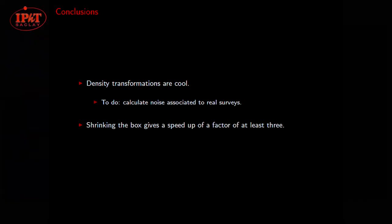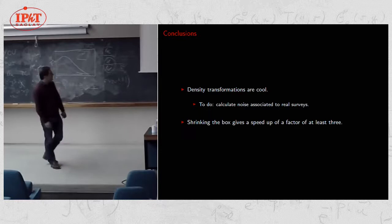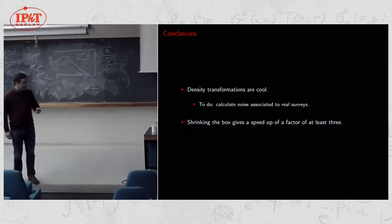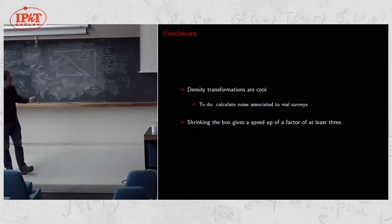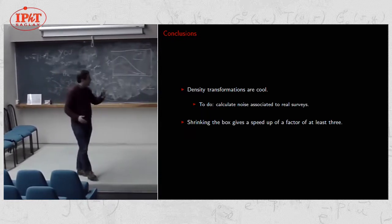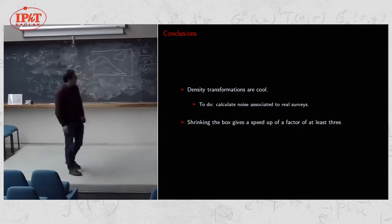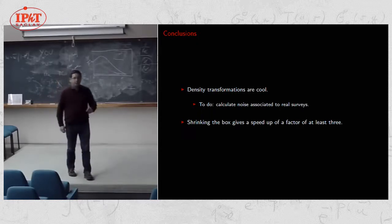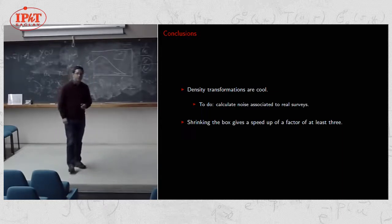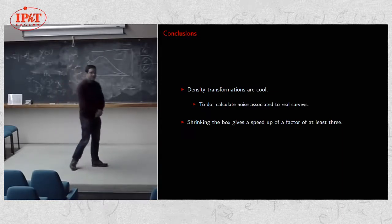So I think that's all I have to say. It's density transformations. You could use them because they can help you to extract more information from the same density fields. The thing I still have to do to fully convince you probably is to calculate, because the signal to noise there is the theoretical assuming a perfect density distribution. What I have to do is to include the noise associated to surveys, you know, like shot noise or holes in the surveys and stuff like that. But I am hoping that it will still work. And the other thing I talked about was about shrinking the box size while the simulation runs. And there is a speed up of a factor of 3 at least and hopefully more. So that's all I have to say. Thank you.